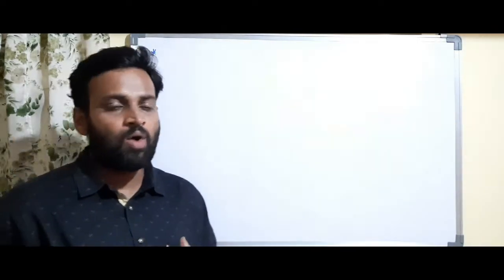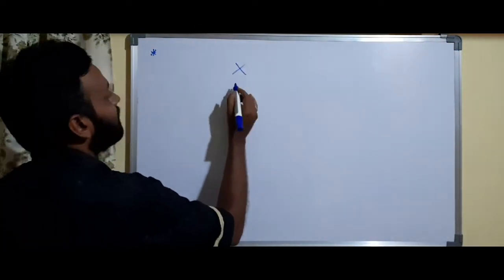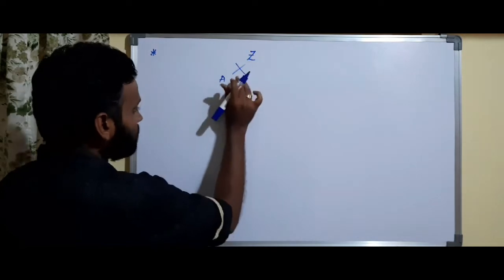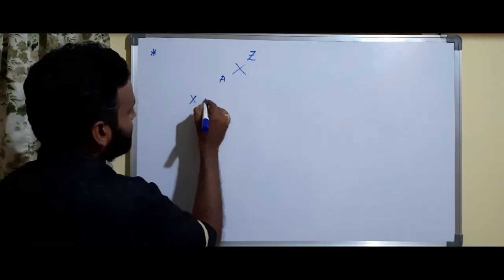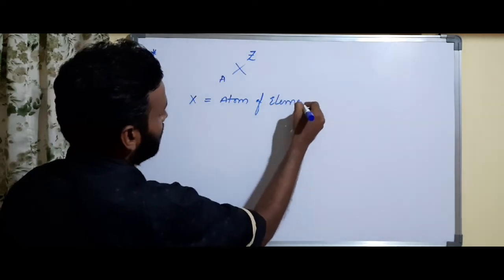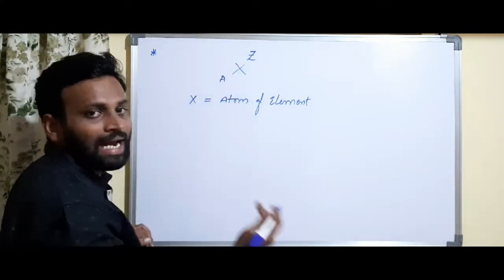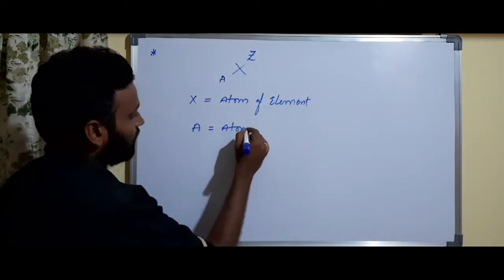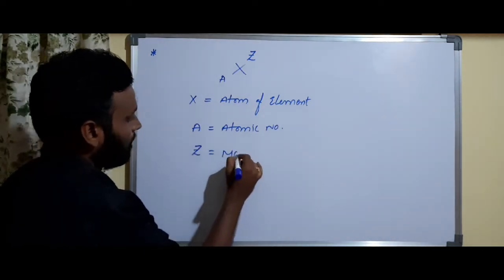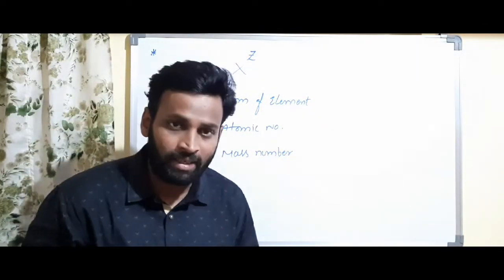To understand all these things, first of all, how an element is represented. Element can be represented as X, where X is the atom of a particular element — one kind of isotope which exists for a particular atom. Here A is the atomic number and Z is the mass number of that particular atom.